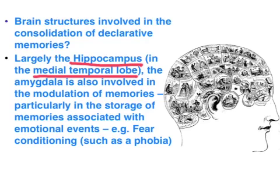The amygdala also plays a role in the modulation of memories, particularly in terms of the emotional aspects of episodic memories, and that's worth noting.